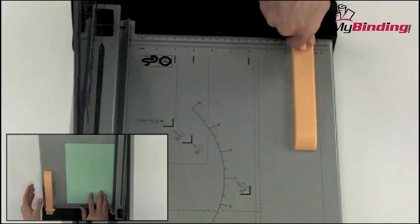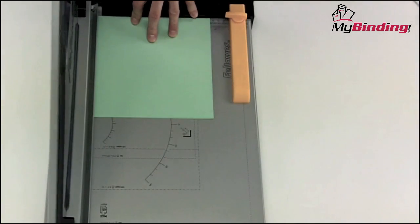The Plasma 180 has an 18-inch cutting length, so you'll be able to slice through letter and legal-sized paper with ease.